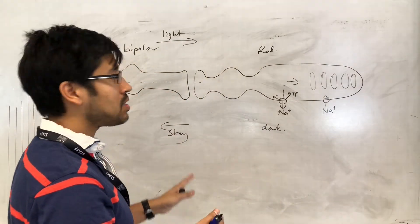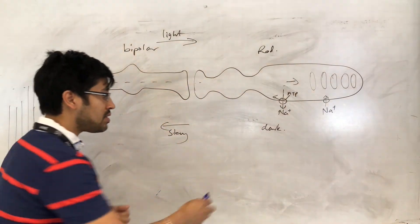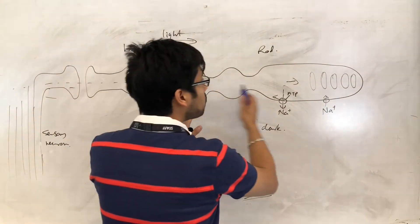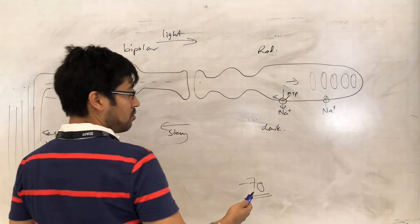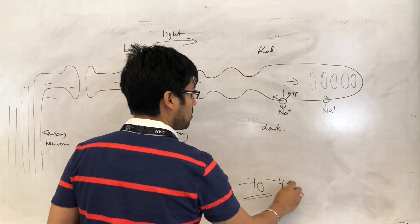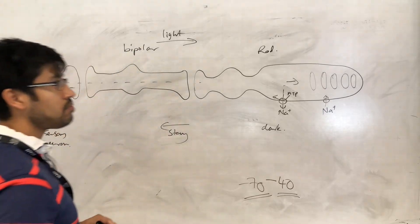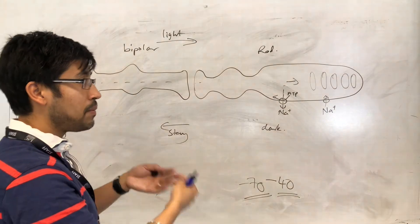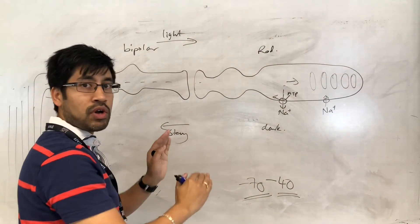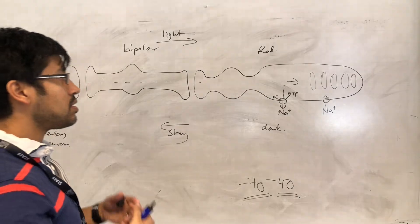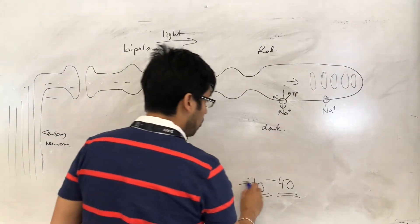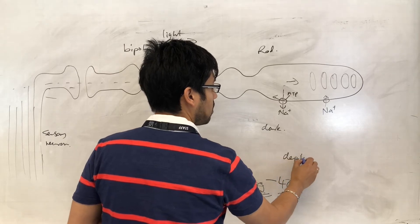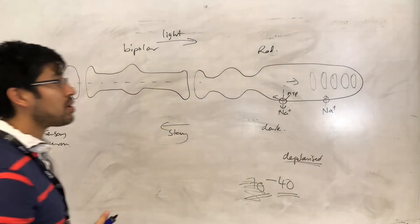whereas normally we might expect a cell to be polarized and be around about minus 70 millivolts, the rod cell maintains itself at around minus 40. Because some sodium is being allowed to come in, whereas, remember, normally sodium is not coming in unless there is depolarization occurring. So, normally, these cells are slightly depolarized.